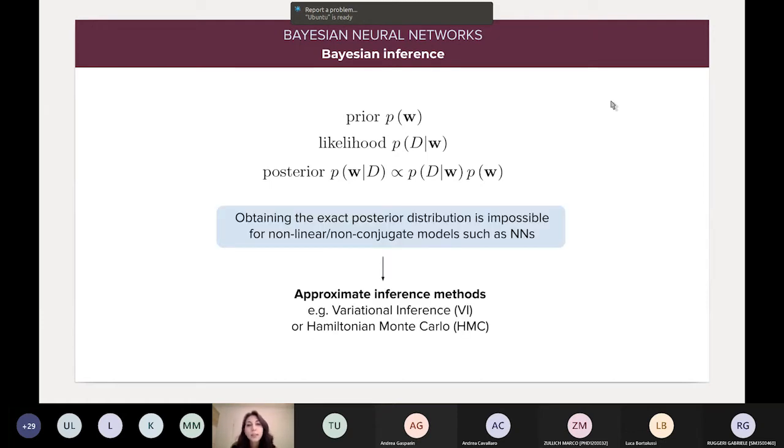So, the problem is that, in the case of Bayesian neural networks, obtaining the exact posterior distribution is an intractable problem. And what we do instead is we rely on approximate inference methods. And here I'm just mentioning a couple of methods that we used in our work. And they are, in particular, variational inference, which is an optimization-based approach, and Hamiltonian Monte Carlo, which is a sampling-based approach.